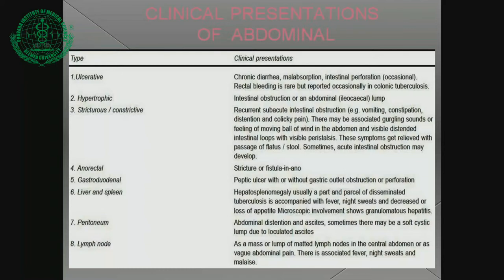Clinical presentations of abdominal tuberculosis depend on the type. Ulcerative type causes chronic diarrhea, malabsorption, intestinal perforation, and rectal bleeding — rare but reported in chronic colonic tuberculosis. Hypertrophic type presents with intestinal obstruction or an abdominal ileocecal lump. Stricturous or constrictive type causes recurrent subacute intestinal obstruction — e.g., vomiting, constipation, distension, and colic pain. There may be gurgling sounds, a feeling of a moving ball of wind in the abdomen, and visible distended intestinal loops with visible peristalsis. Symptoms are relieved with passage of flatus or stool; sometimes acute intestinal obstruction may occur.